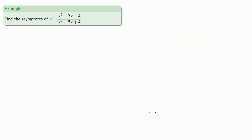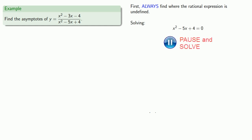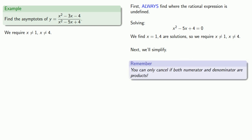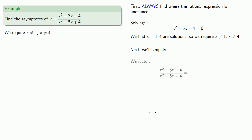Let's find the asymptotes of this rational function. Whether or not you're looking for asymptotes, the first thing we should always do is find where the rational expression is undefined — those are places that make the denominator equal to 0. We find that x equals 1 or x equals 4 are solutions, so we require x cannot equal 1 and x cannot equal 4. Next, we'll try to simplify by factoring — you can only cancel if both numerator and denominator are products. Since we know the roots of x squared minus 5x plus 4, it factors as x minus 4 times x minus 1, and then we can factor the numerator.